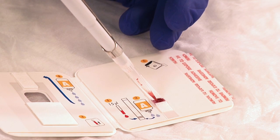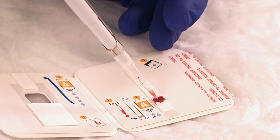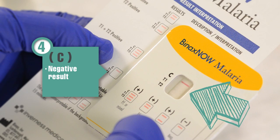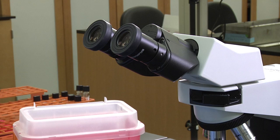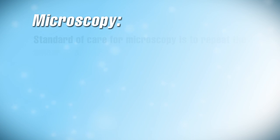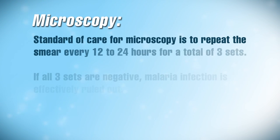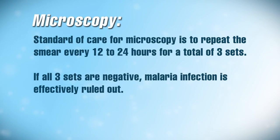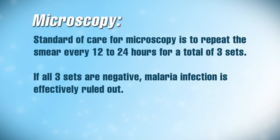Remember that a negative test result does not necessarily exclude infection with malaria. Negative results may occur in cases with low-level parasitemia. The standard practice for diagnosis of malaria is to perform repeat blood smears every 12 to 24 hours for a total of three sets of smears. If all three sets of smears are negative, malaria infection is effectively ruled out.